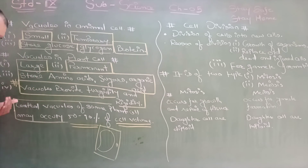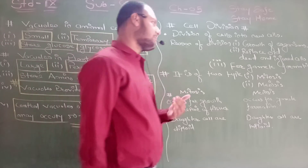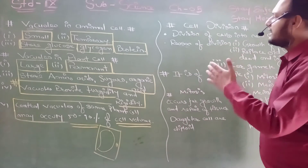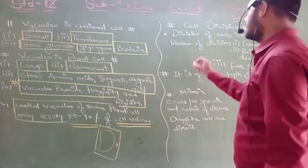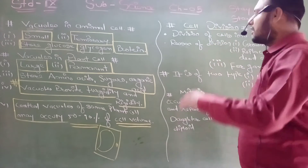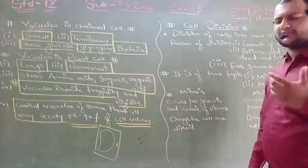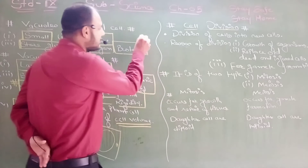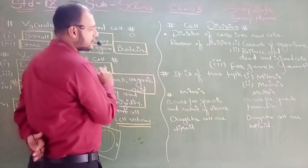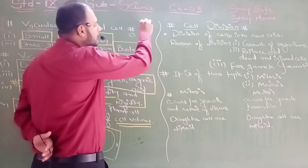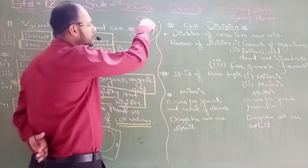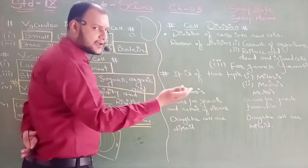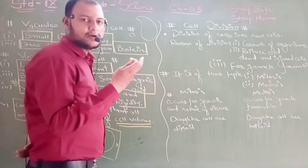Now we are moving towards the last topic of this chapter — cell division. In today's lecture we will end this chapter with this new topic. You may wonder whether cells also divide. The cell is very small, and the human body is very large. Without cell division, so many cells cannot be formed and the human body cannot be built.